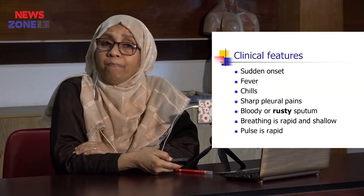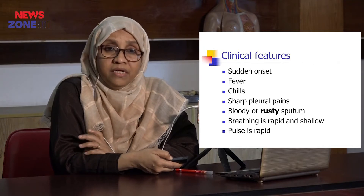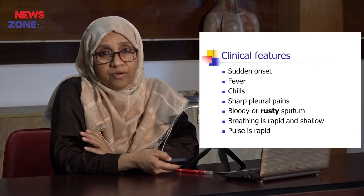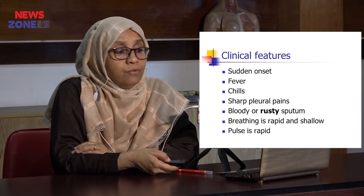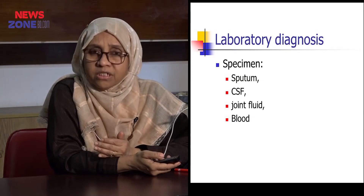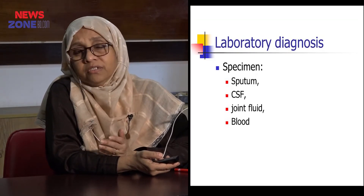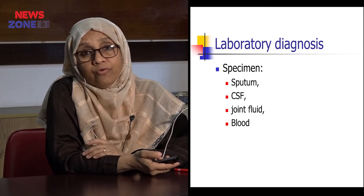The clinical features: onset will be sudden with fever, chills, and sharp pleural pain. If pneumonia occurs, there will be sharp pleural pain and bloody rusty sputum — a typical finding of pneumococcal infection. Breathing is rapid and shallow and pulse will be rapid. For diagnosis, you must collect sputum, not saliva. If the patient cannot expectorate, give physiotherapy and explain how to provide proper sputum without mixing with saliva.